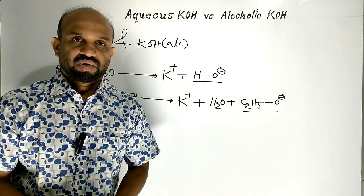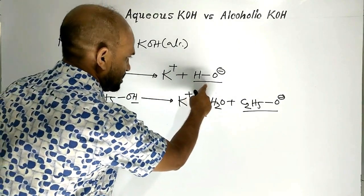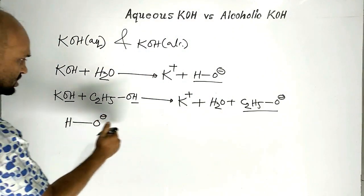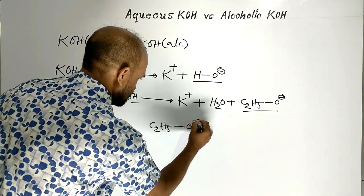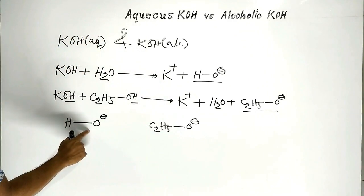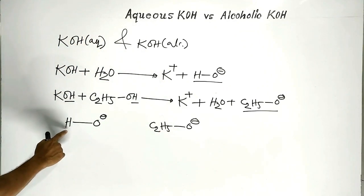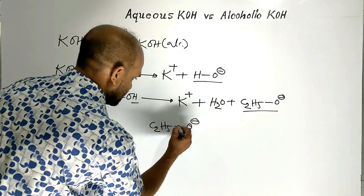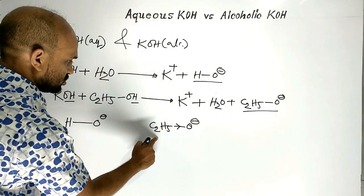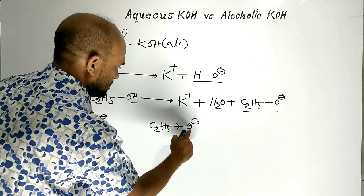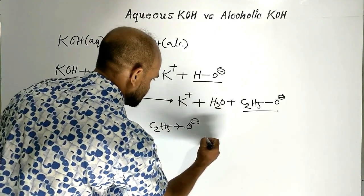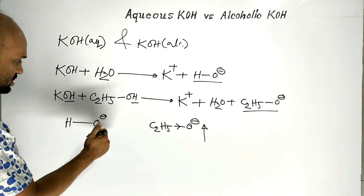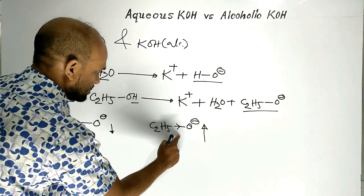Now let us see the basic difference between hydroxide ion and ethoxide ion. In hydroxide ion, oxygen is bonded to hydrogen. But in ethoxide ion, oxygen is bonded to an alkyl group. We know alkyl group is a kind of electron-donating group, which is why in ethoxide ion, electron density over oxygen increases, whereas in hydroxide ion, electron density over oxygen is comparatively less.